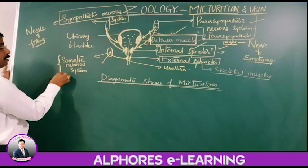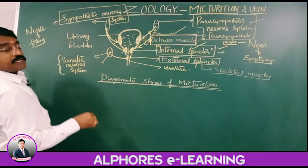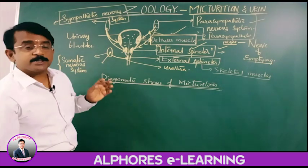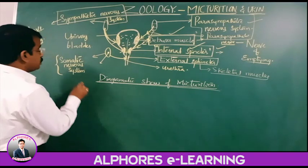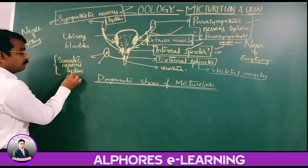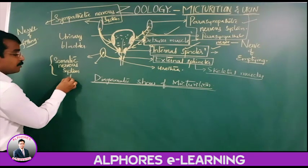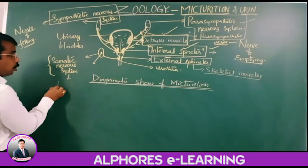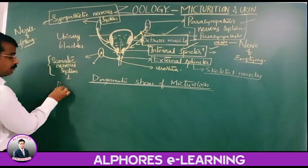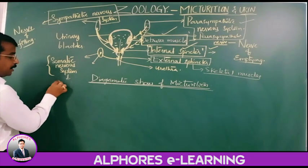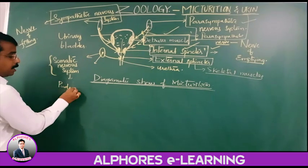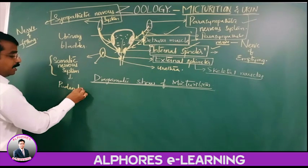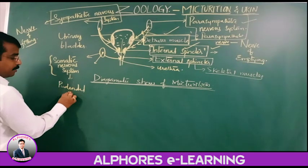One more point: the nervous supply of the somatic nervous system is also present, with the nerve named the pudendal nerve.